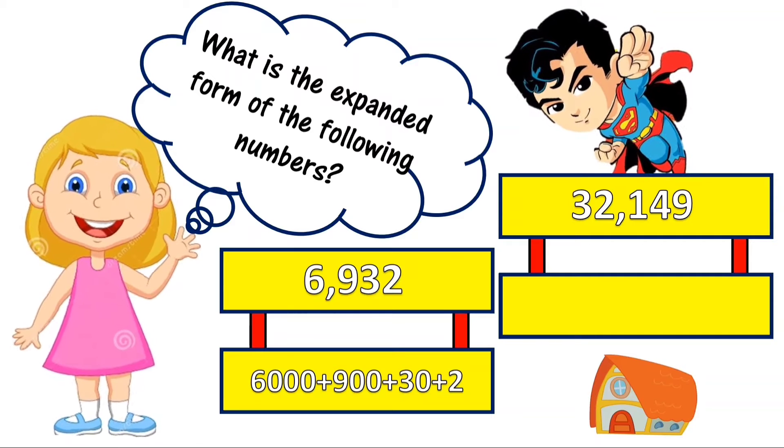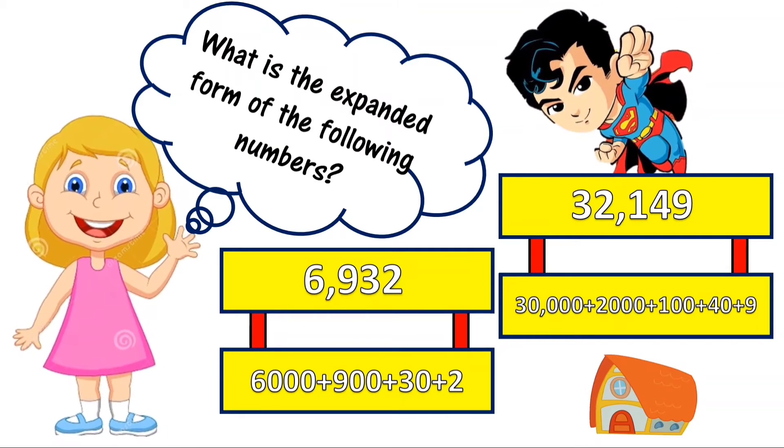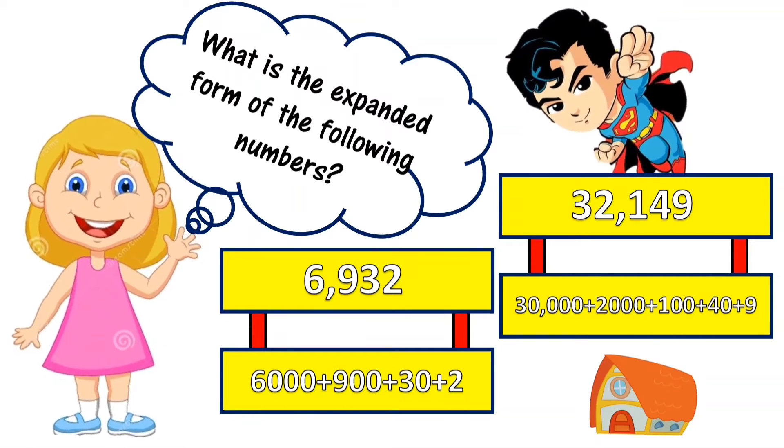32,149 can be expressed as 30,000 plus 2,000 plus 100 plus 40 plus 9 equals 32,149, which is read as thirty-two thousand, one hundred forty-nine.